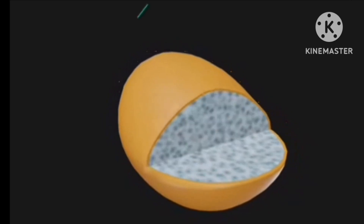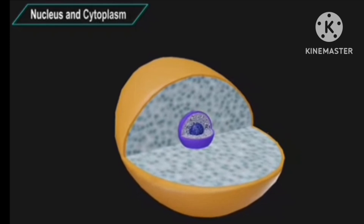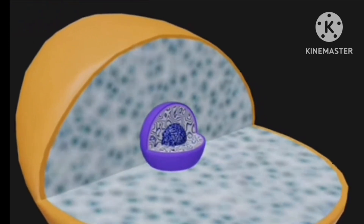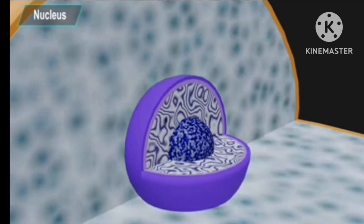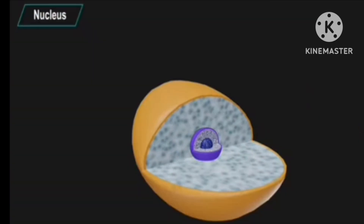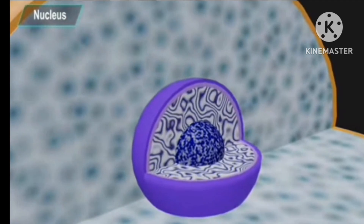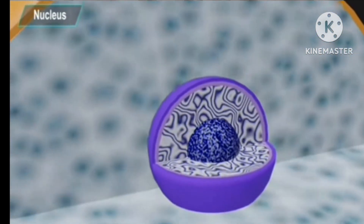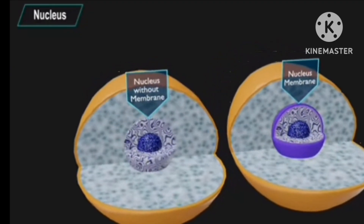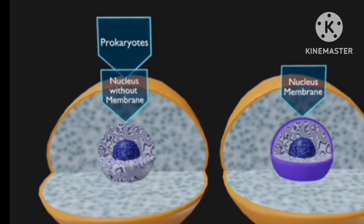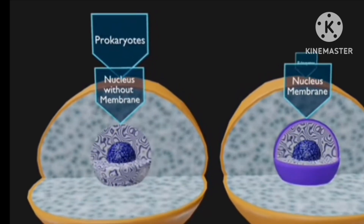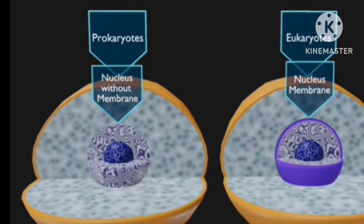A nucleus is defined as a double-membrane eukaryotic cell organelle that contains the genetic material. The nucleus contains the cell's hereditary information and controls the cell's growth and reproduction. It is a membrane-bound structure that comprises the genetic material of a cell — not just a storage compartment of DNA, but also the home of some important cellular processes. Cells in which the nucleus has no membrane are called prokaryotic cells; cells which have a nucleus with a membrane are called eukaryotic cells.